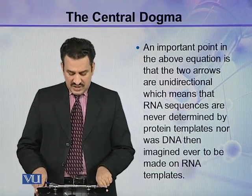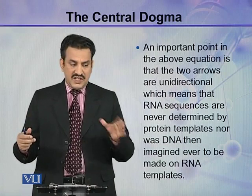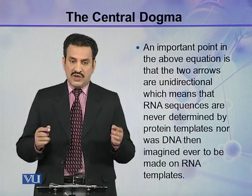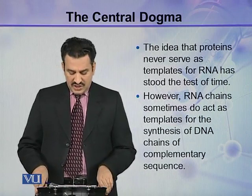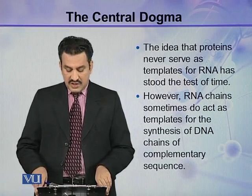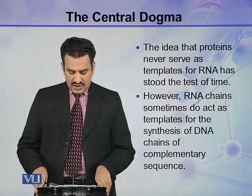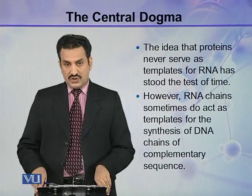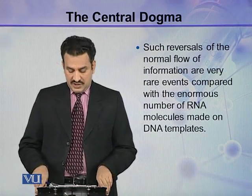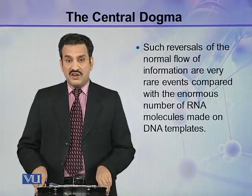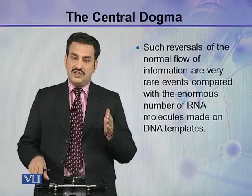This means that RNA sequences are never determined by protein subunits or protein templates; similarly, DNA can never be synthesized from protein. That is why unidirectional arrows are used. The idea that proteins never serve as templates for RNA synthesis has stood the test of time. However, RNA chains sometimes do act as templates for the synthesis of DNA chains of complementary sequence, though such reversals of the normal flow of information are very rare events compared with the enormous number of RNA molecules being synthesized on DNA templates.